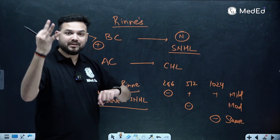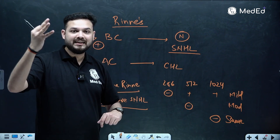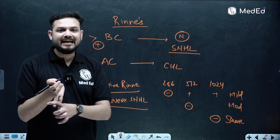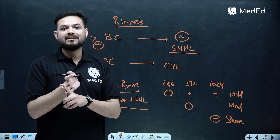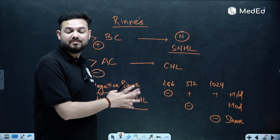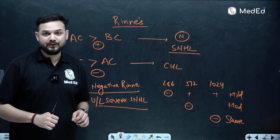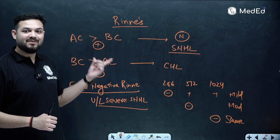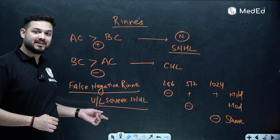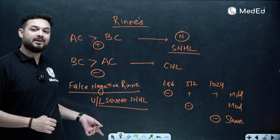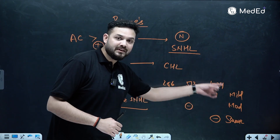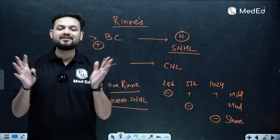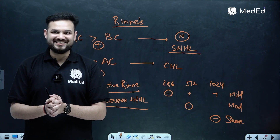You can get to know three important things using the STD mnemonic: side of hearing loss, type of hearing loss, and degree of hearing loss. So we have learnt what is negative Rinne's, positive Rinne's, and false negative Rinne's — a very important question seen in unilateral severe sensorineural hearing loss — and how different frequencies help determine the degree of hearing loss. This is all about Rinne's test.